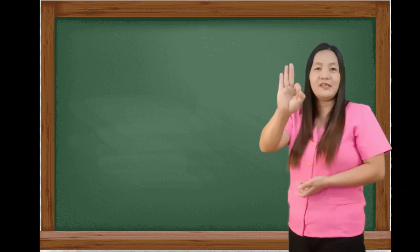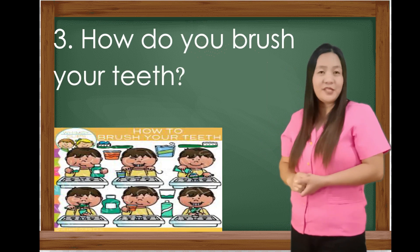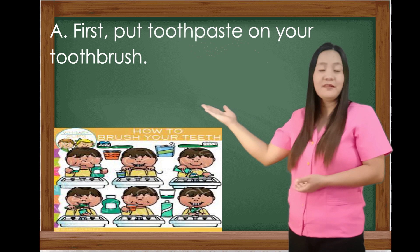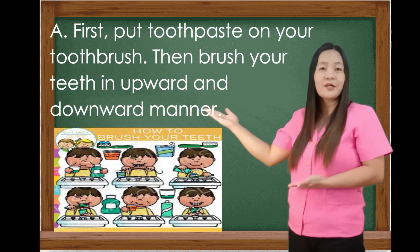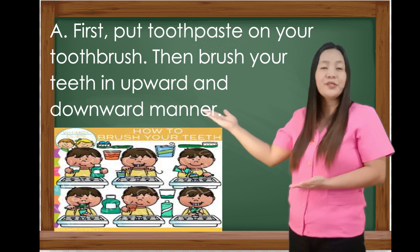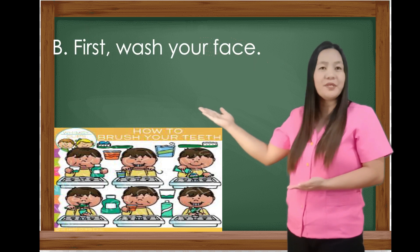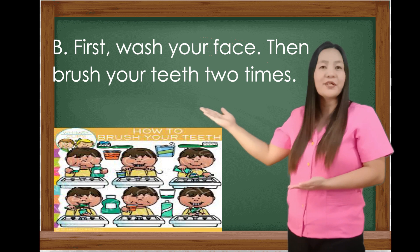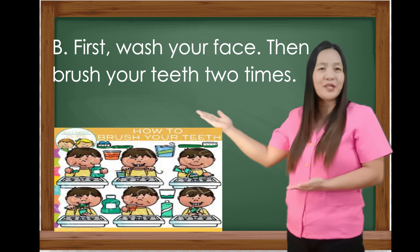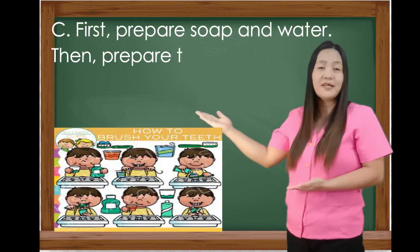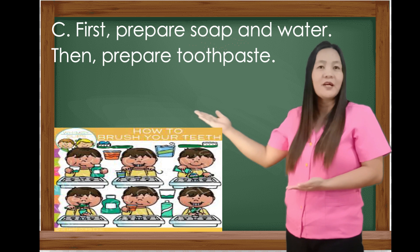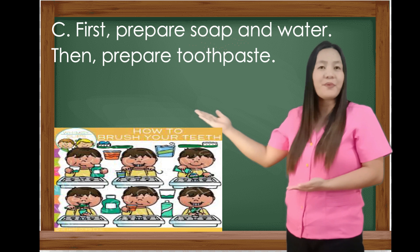Number 3. How do you brush your teeth? Letter A: First, put toothpaste on your toothbrush. Then, brush your teeth in an upward and downward manner. Letter B: First, wash your face. Then, brush your teeth two times. And Letter C: First, prepare soap and water. Then, prepare toothpaste.